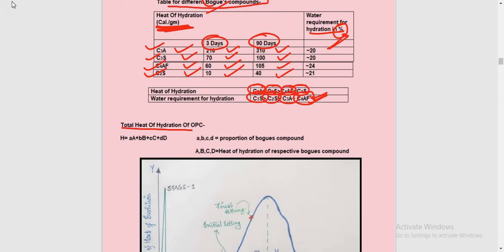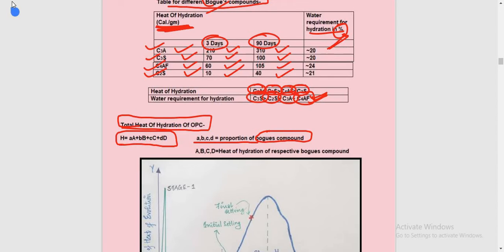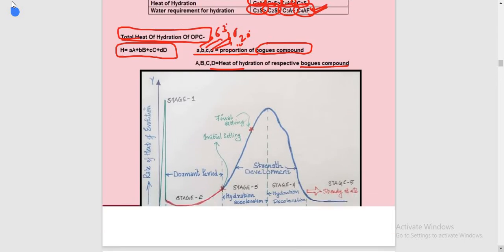To find the total heat of hydration of OPC (Ordinary Portland Cement), we use the formula with terms A, B, C, and D. Here the small a, b, c, d represent the proportion of each compound — for example, A is 63%, B is 25%, C is 20%, D is 10%. These proportions are multiplied by the respective heat of hydration of each Bogue compound taken from the table, and their sum gives the total heat of hydration.